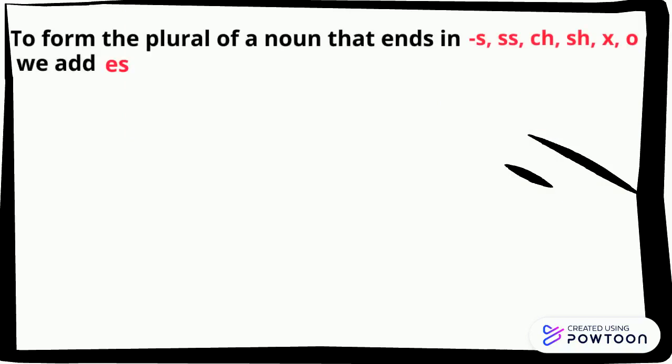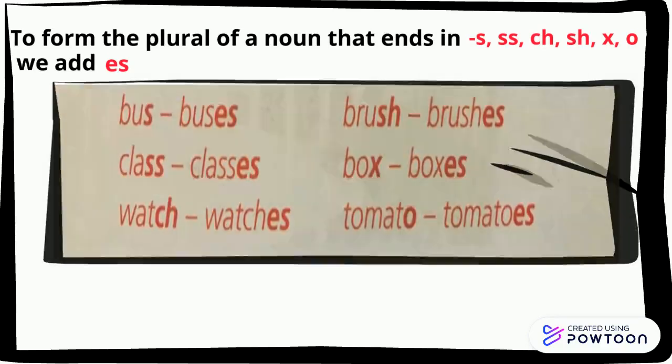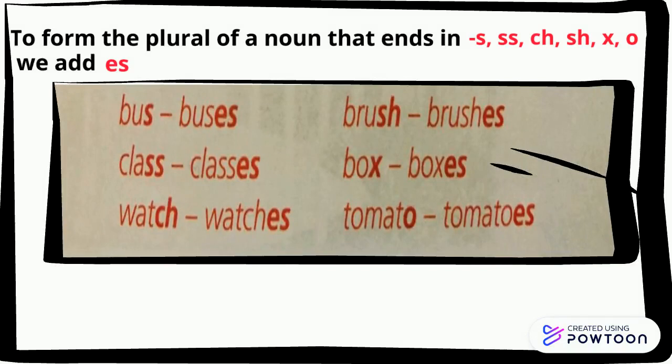To form the plural of nouns that end in s, ss, ch, sh, x, or o, we add es. For example, bus becomes buses, class becomes classes, watch becomes watches, brush becomes brushes, box becomes boxes, tomato becomes tomatoes.